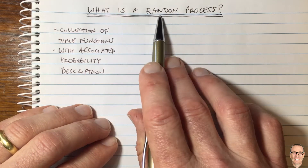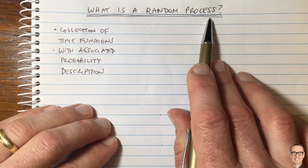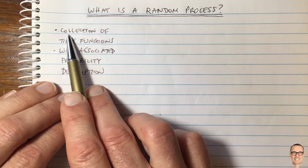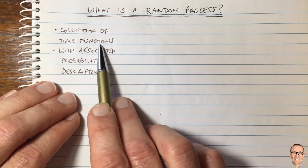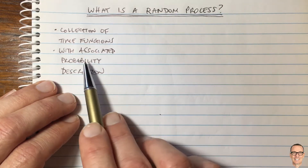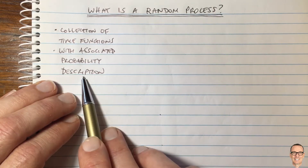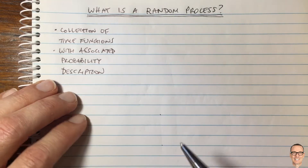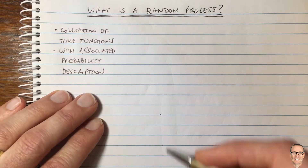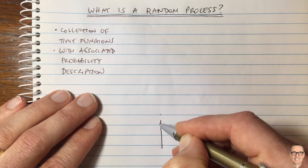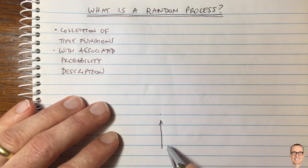So what is a random process? Well, it's a collection of time functions with associated probability description. But what does that mean? Let's look at an example to help us with this.